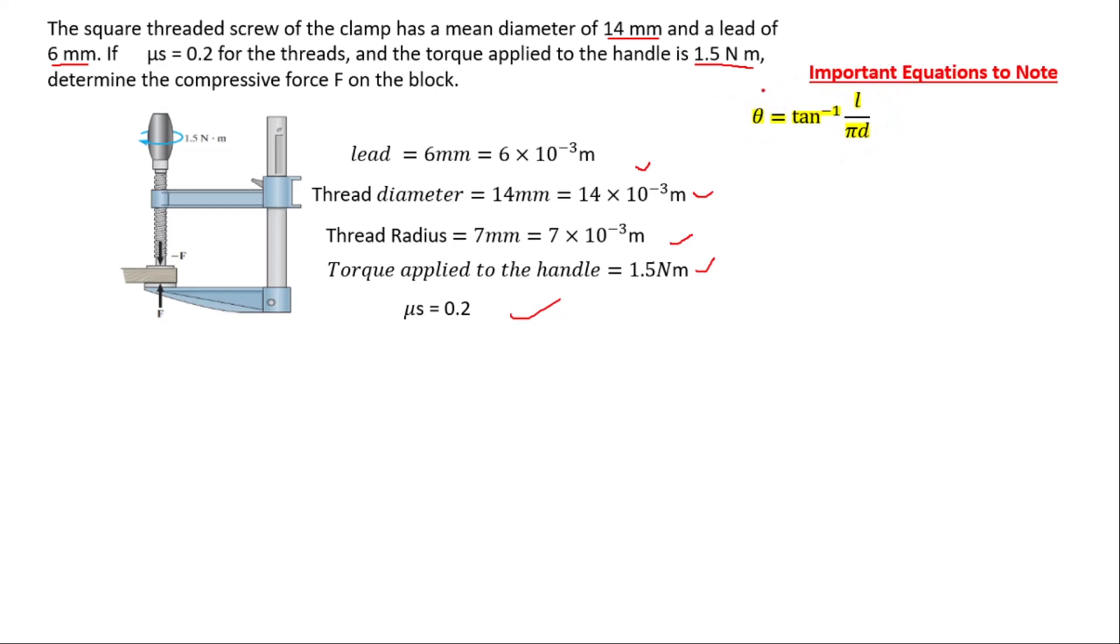Theta usually represents the lead angle, also called the helix angle or the angle of inclination, which is equal to tan inverse of L. L is the lead, the distance through which the screw advanced in one turn.